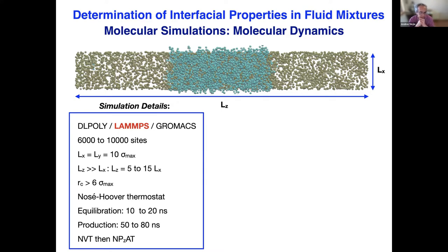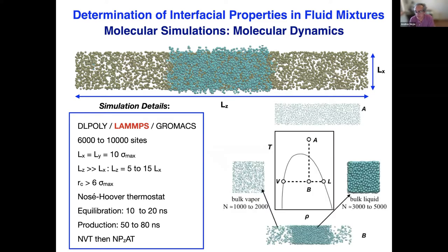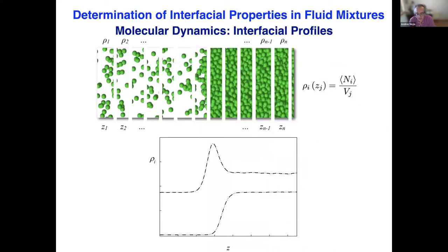We carry out the simulation in the NVT or NPT ensemble. To obtain interfacial properties, we apply the temperature quench procedure: we use a self-consistent prediction to obtain the density of each phase, set the concentration for simulation at a high temperature, then quench to the desired temperature and wait for the system to reach equilibrium. To obtain density profiles, we divide the simulation box into different slices and calculate the density using the standard expression.